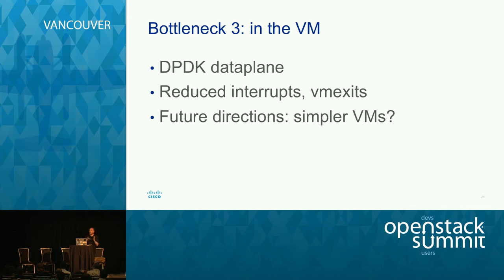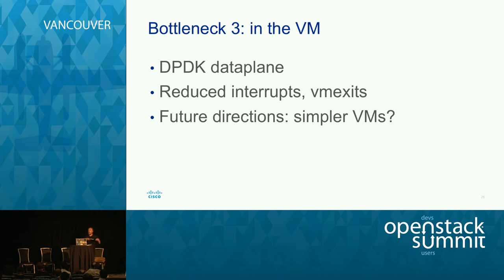In future directions, one thing we've been thinking about is simpler virtual machines. At the moment many network vendors offer full-service routers delivering every feature imaginable. You could reduce that down to only exactly what you need and get a speed boost — but it's a balance between development time, service delivery, and if you're running many VMs chained together, the overhead of passing packets through all those VMs can cost more than the benefit of having simple ones.